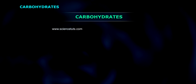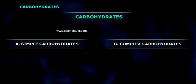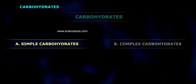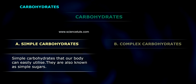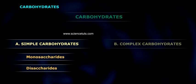Classification: Majorly, carbohydrates are divided into two groups — A. Simple carbohydrates and B. Complex carbohydrates. Simple carbohydrates are those that the body can easily utilize; they are also known as simple sugars. These are of two types: monosaccharides and disaccharides.